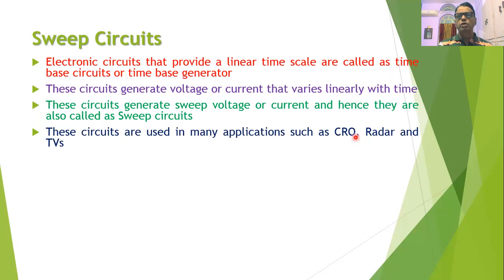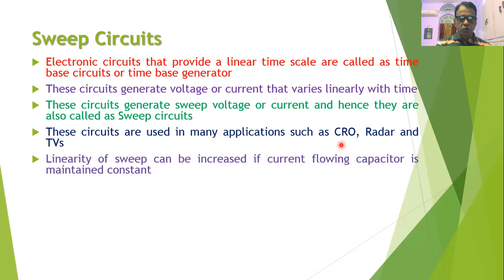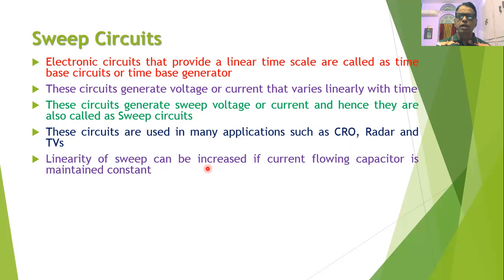Sweep circuits are very important since they are needed in many applications. Whenever we want to achieve horizontal motion of the electron beam in a CRO screen, radar screen, or television, these circuits are used. The linearity of the sweep depends on the current flowing through the capacitor — if this current is maintained at a constant level, the linearity of the sweep increases.